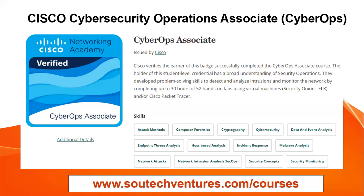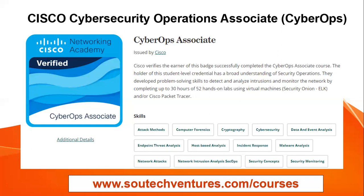That badge can be shared on LinkedIn, and you can get a transcript for it. It verifies that you've gone through the curriculum: up to 30 hours of training, about 52 hands-on labs, and use of Security Onion — deployable either live or on Cisco Packet Tracer. Skills covered in this course include attack methods, computer forensics, cryptography, cybersecurity, data event analysis, and SIEM — Security Information and Enterprise Management — where you log and analyze incidents. You also cover SOAR, endpoint threat analysis, host-based analysis, and incident response.